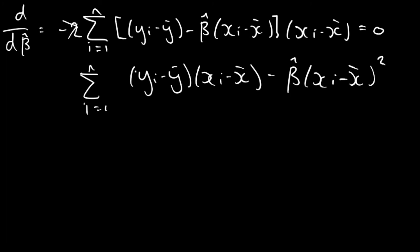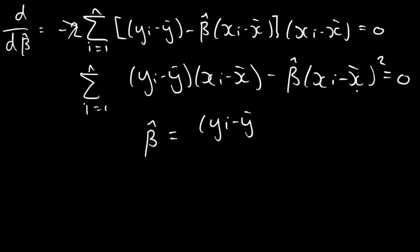Since this is set equal to zero, we can rearrange for beta hat. We move one term to the other side of the equation and divide through by the sum of (xi minus the mean of x) squared, which is the variance of x. This gives us our OLS estimator for beta hat.